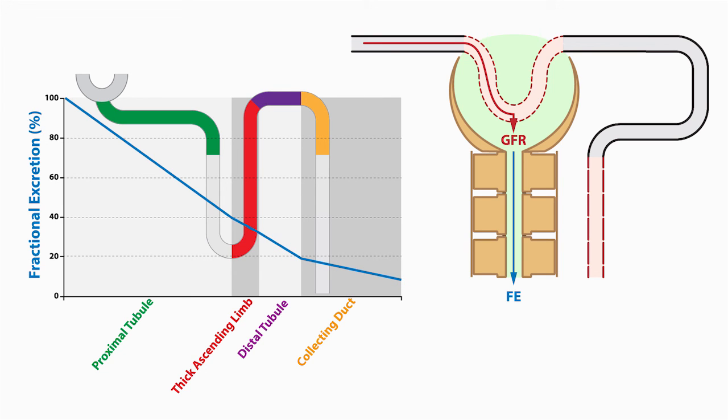Likewise, a fractional sodium excretion less than 1% is indicative of decreased renal perfusion, typically in the context of hyponatremia or volume depletion, or increased sodium reabsorption like that seen in Gitelman syndrome. Also, a fractional sodium excretion above 2 or 3% could be due to acute tubular necrosis or another form of kidney damage.